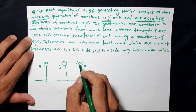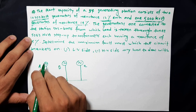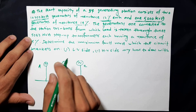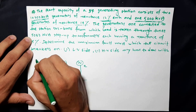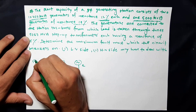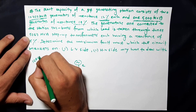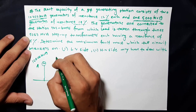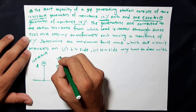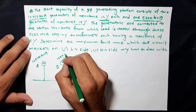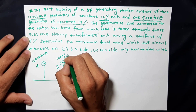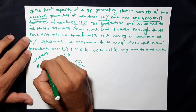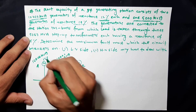The first generator value is 10,000 KVA. This is 10,000 KVA, and the reactance is 12%.